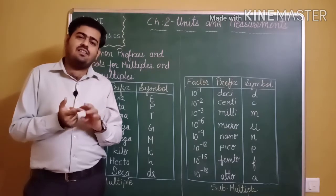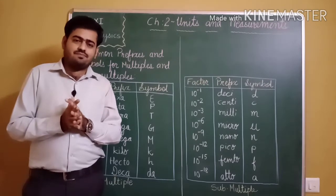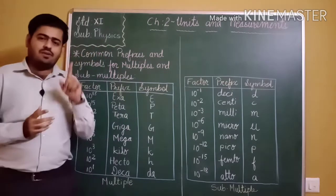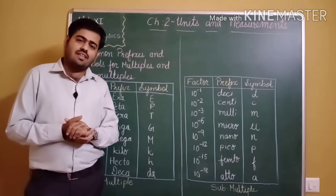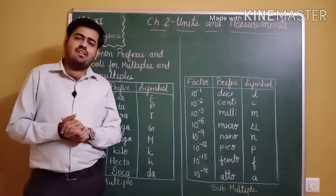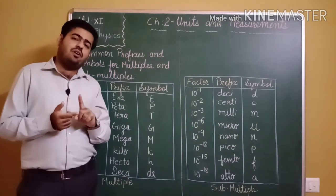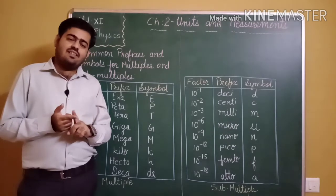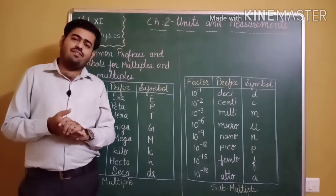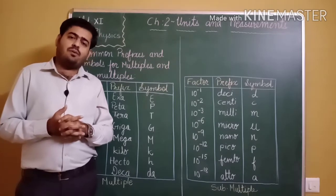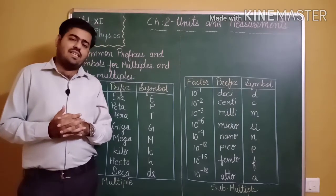We also studied about systems of measurement. There are four systems: CGS, FPS, MKS, and SI. Nowadays we use the SI system. In the SI system there are seven fundamental quantities: length, mass, time, electric current, temperature, amount of substance, and luminous intensity. Their units are meter, kg, second, ampere, Kelvin, mole, and candela.